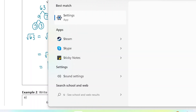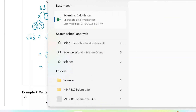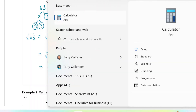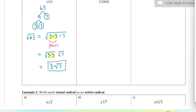I'm going to bring up my scientific calculator. I'll type the square root of 63, which is what we started with — we can see the decimal 7.937. And now I'll type the square root of 7 and multiply it by 3, and we should get the same answer — 7.937. So they have the same number, just written in two different ways.